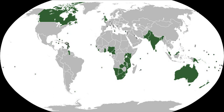The current Commonwealth of Nations was formally constituted by the London Declaration in 1949, which modernised the community and established the member states as 'free and equal'. The symbol of this free association is Queen Elizabeth II, who is the head of the Commonwealth. The Queen is head of state of 16 member states, known as the Commonwealth realms, while 32 other members are republics and 5 others have different monarchs.